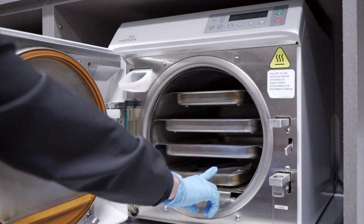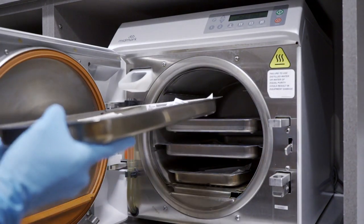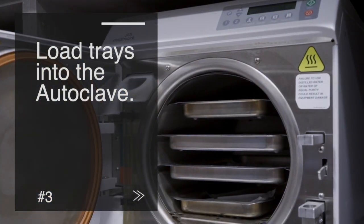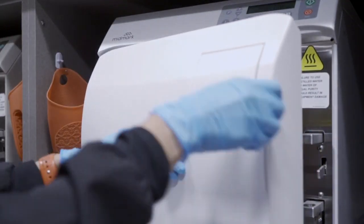Trays can be removed depending on the size of the instruments you need to process. Load the trays in, then close the door. Push it in slightly so that it clicks.